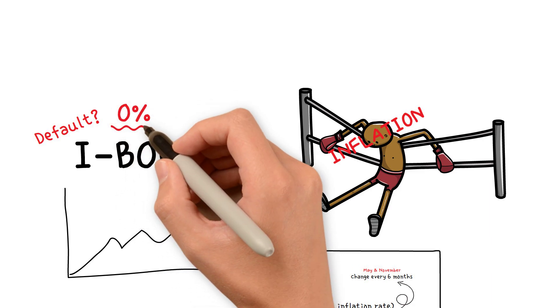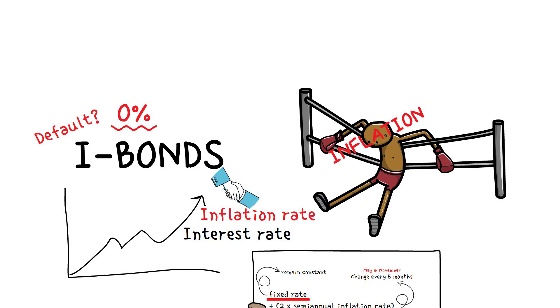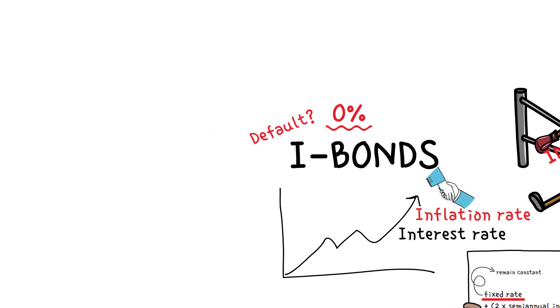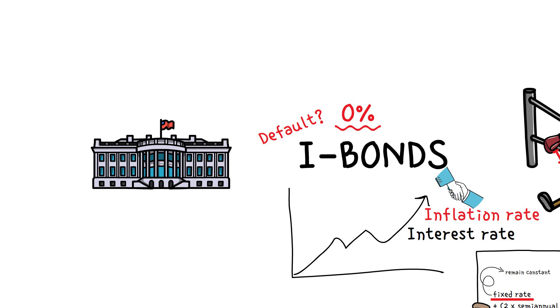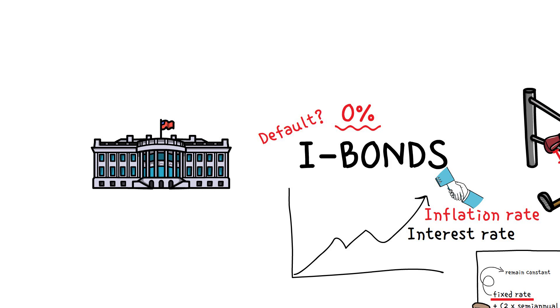are very close to that 0%. This is because I bonds are issued and guaranteed directly by the United States government. This bond will only default if the U.S. government fails. Will the United States,